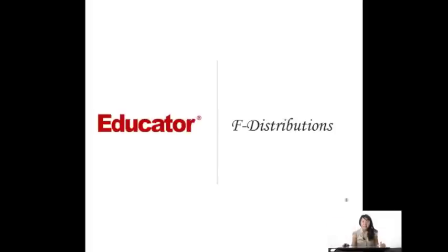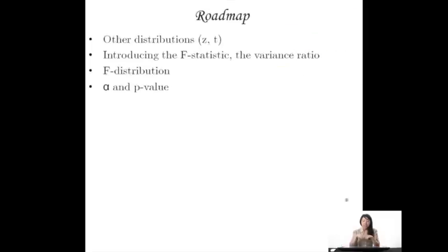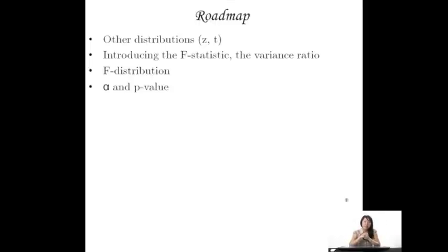Hi, welcome to Educator.com. We're going to talk about F distributions today. First, we're going to review other distributions we've covered besides F, namely Z and T. Then we're going to introduce the F statistic, also called the variance ratio. Then we're going to talk about the distribution of all these F ratios, and finally what alpha and p-value mean in an F distribution, because eventually we're going to do hypothesis testing with the F statistic.